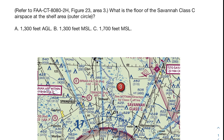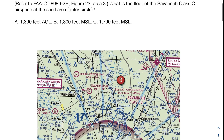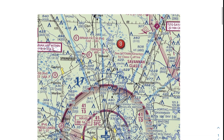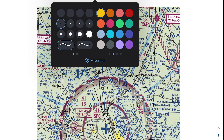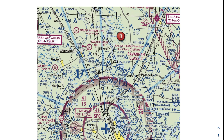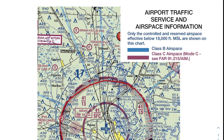What is the floor of the Savannah Class C airspace at the shelf area, outer circle? We have three options here. I would recommend you not actually look at the answers when you're doing this problem on your test, because then you make assumptions or jump to conclusions. I like to come to the answer organically and then compare it to whatever choices I have. So let's skip over the answers and take a look at this figure. Savannah Class C — we know it's Class C because it's got that red outer circle.